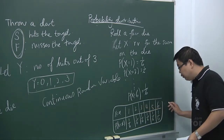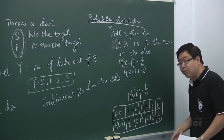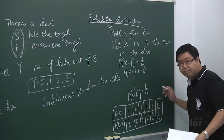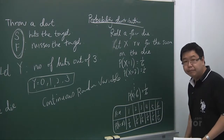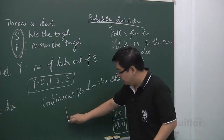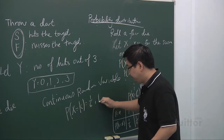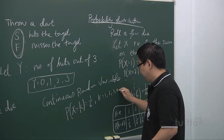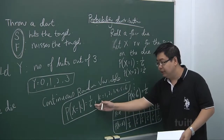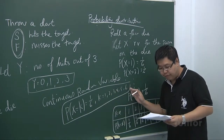Of course, this tabular approach is not always feasible if X can take many more than 6 values. So sometimes we use a formula to help summarize these values. In this case, you can write the probability distribution as P(X = k) = 1/6, where k takes values 1, 2, 3, 4, 5, and 6. This also represents the probability distribution.